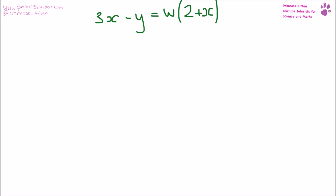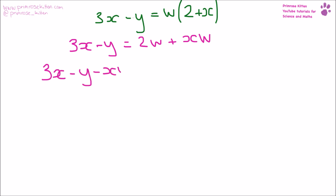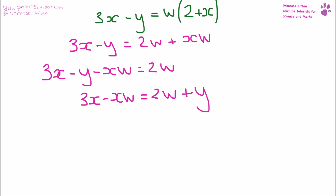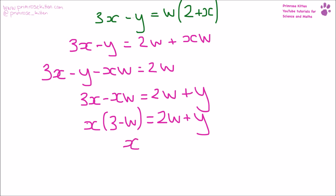Here I want to make x the subject of the formula. You can see it's on both sides of the equation, and on one side it's in a bracket. So the first thing we'll do is multiply out those brackets: 3x − y = 2w + xw. Get all of the x's over to the left-hand side: 3x − y − xw = 2w. Get everything that isn't an x over to the right-hand side: 3x − xw = 2w + y. Now I have two things times by x, so I pop those into brackets: x(3 − w) = 2w + y. Dividing by that: x = (2w + y) over (3 − w).